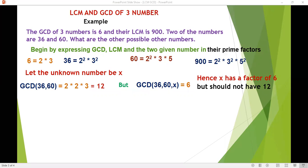Now moving on, if you compare the LCM of the numbers given, 36 and 60, the LCM is 180, but the LCM of the three numbers is 900.